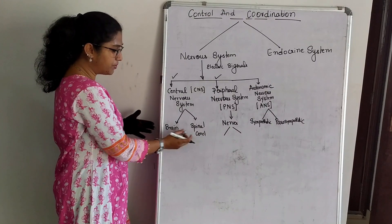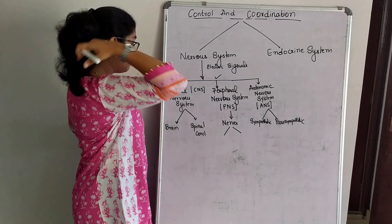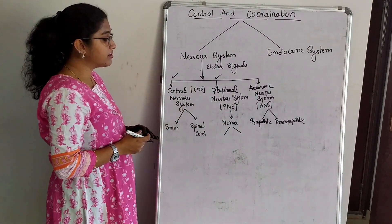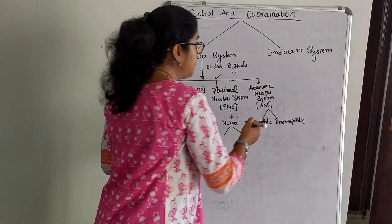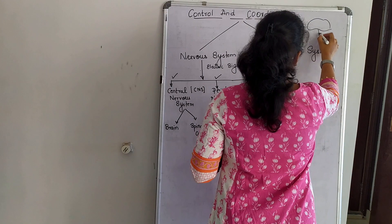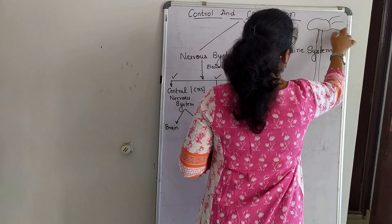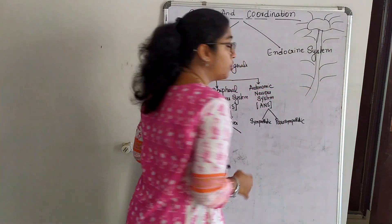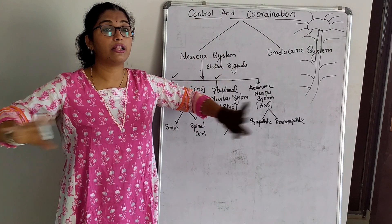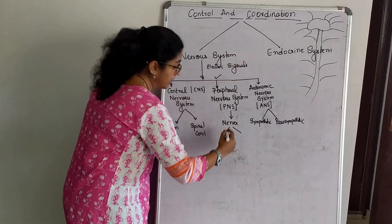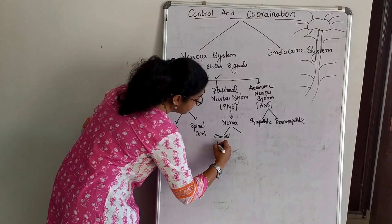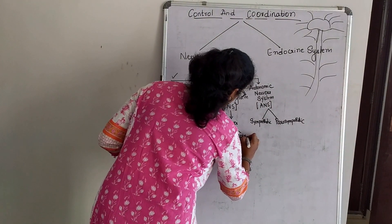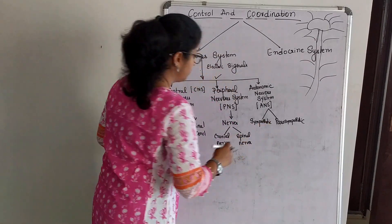Central nervous system is classified into brain and spinal cord. The spinal cord is in the vertebral column — the backbone. From the brain and spinal cord, nerves spread throughout our body. Nerves arising from the brain are known as cranial nerves, and nerves arising from the spinal cord are known as spinal nerves.